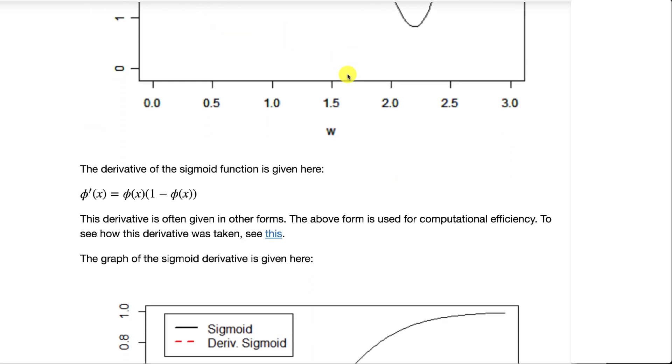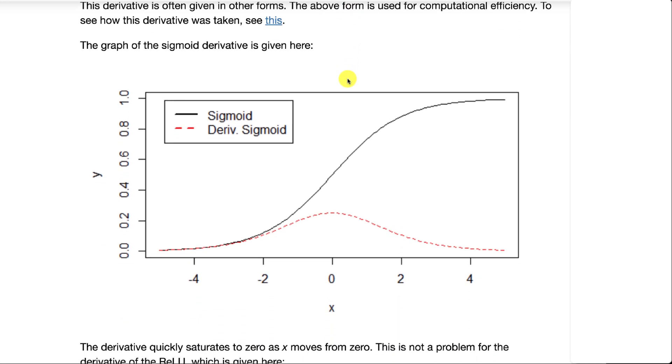If we look at the derivative of the sigmoid function, you can see it by the dashed line. Notice how it quickly converges to zero.